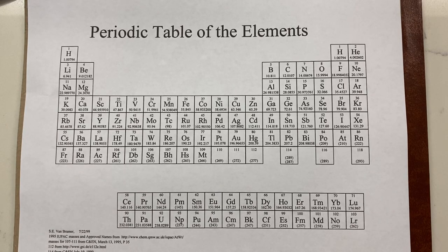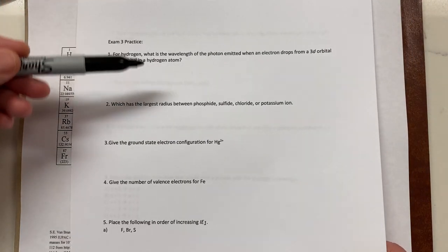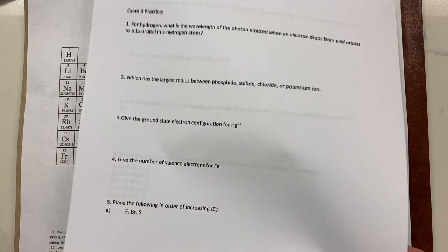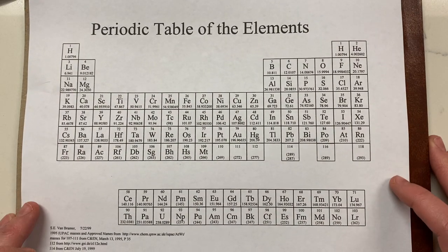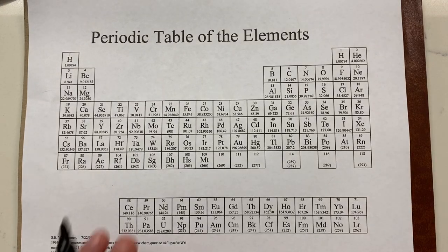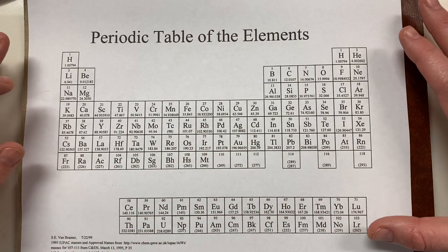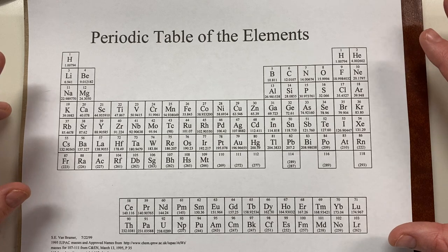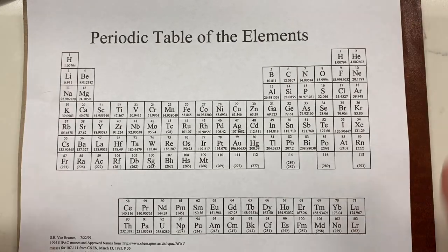We're going to work on practice exam 3 now. The first thing I want you to do is make sure you have it printed out so you can follow along — not just watch and think you understand it, that never works. Make sure you print it out. Also, every time you get an exam dealing with electron configuration, make sure you have your periodic table.